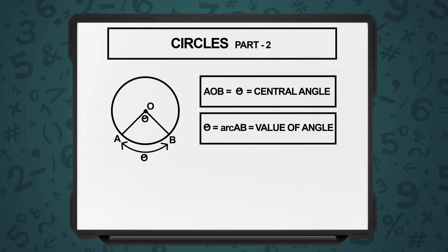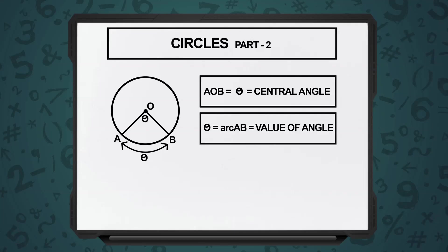A circle, let us say, is the entire thing. Imagine a pizza that you have which is completely round. Now, what you do is, from the center of the circle, you come up to the two ends over here. The angle that is formed in such a way is known as the central angle, and the piece of pizza that we take out is known as the sector.